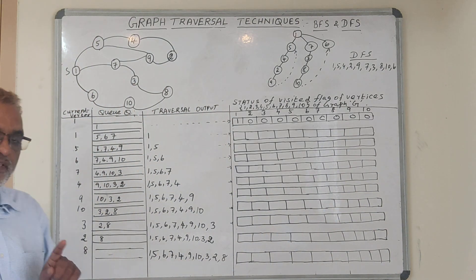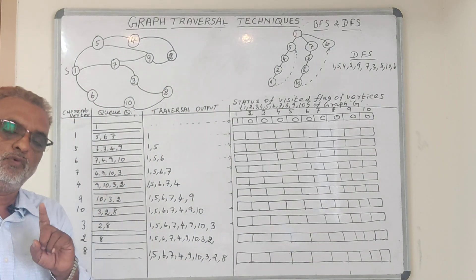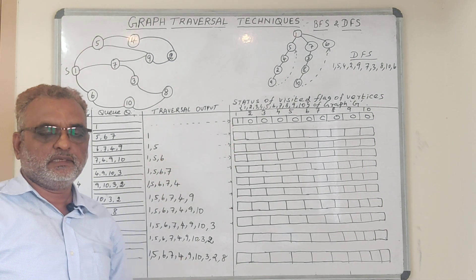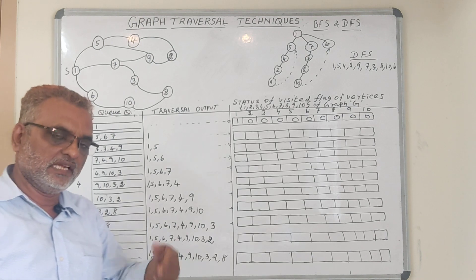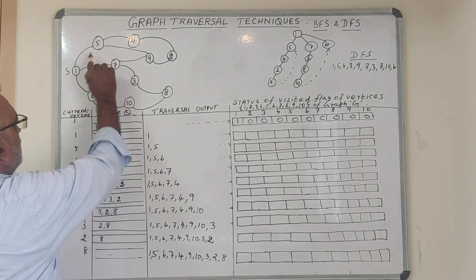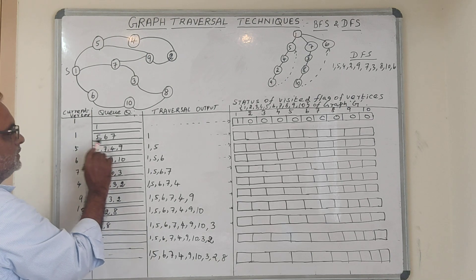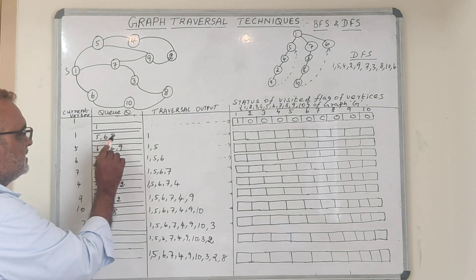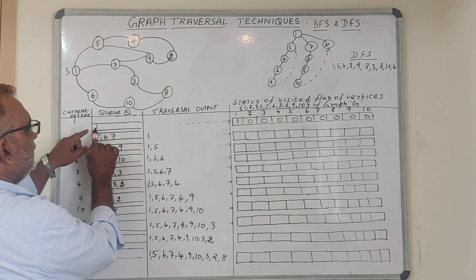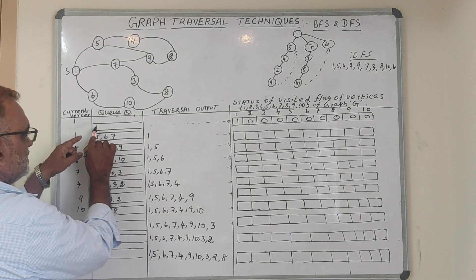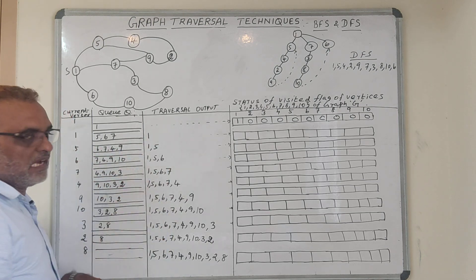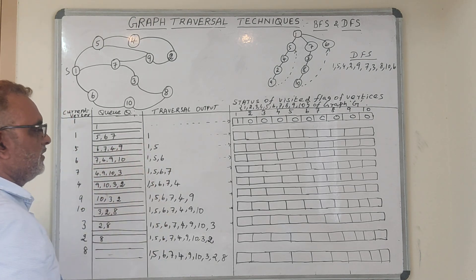One vertex must be visited only one time. Once it is visited, we need not visit that vertex again. Under vertex 1 we have 3 adjacent vertices: 5, 6, and 7 — these are included in the queue. Now we dequeue vertex 1 from the queue and it is stored in the traversal output, so here we write 1.